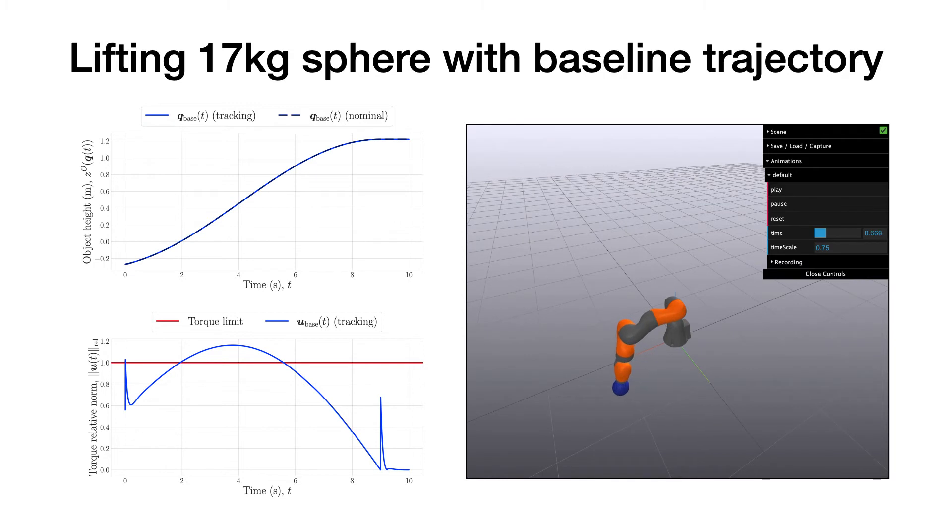If we try to use the baseline trajectory to lift a heavier weight, the torques commanded by the controller exceed the limits. This trajectory doesn't define a valid weightlifting motion for the given weight.